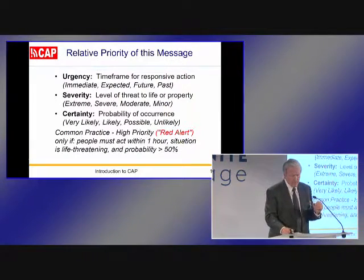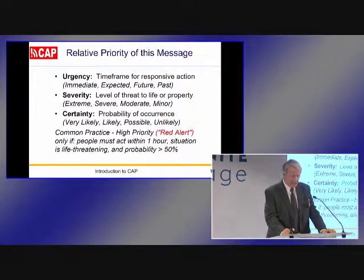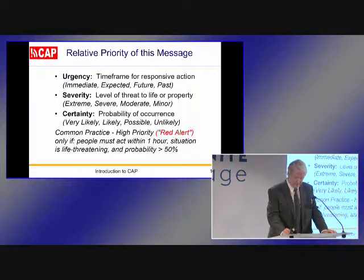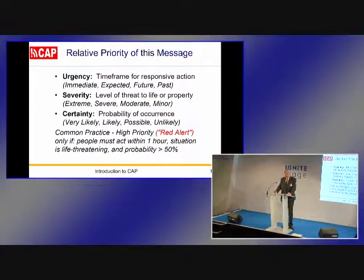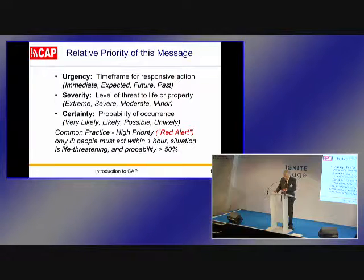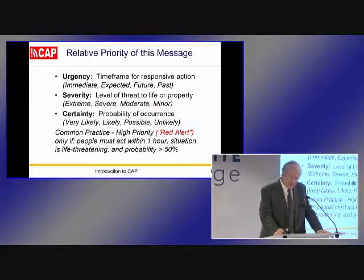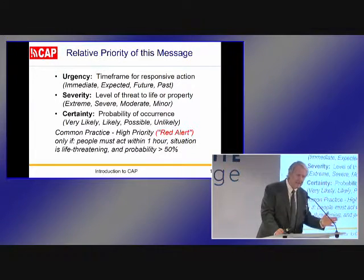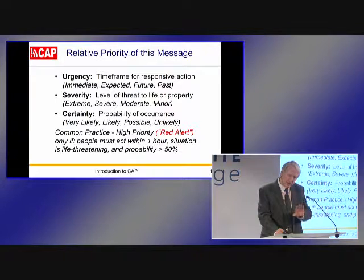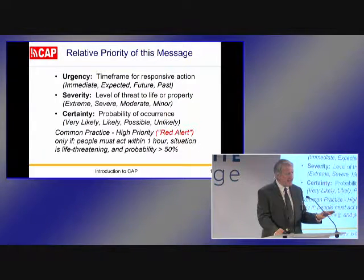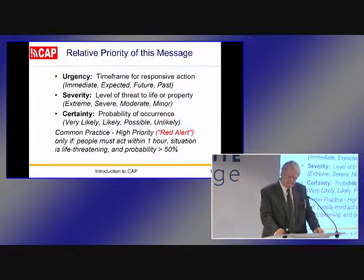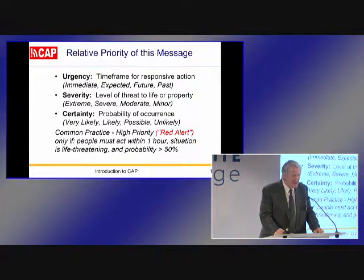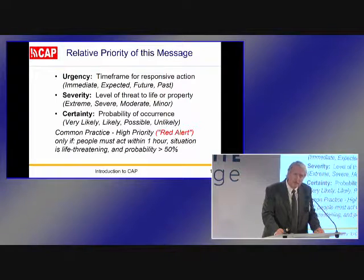For example, the relative priority of this alert is given with three coded values. Urgency: what's the time frame for responsive action? Severity: what's the level of threat to life or property? Certainty: what's the probability that it will occur? There's already a common practice for high-priority alerts, sometimes called red alerts, where urgency, severity, and certainty are all set at the top two levels. That means: people must act within the next hour, the situation is life-threatening, and we're at least 50% certain.